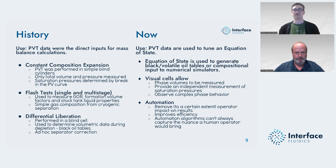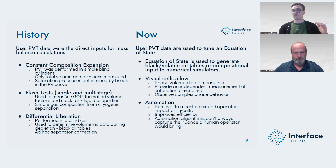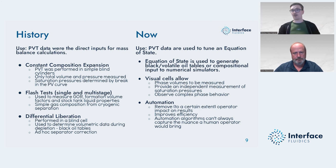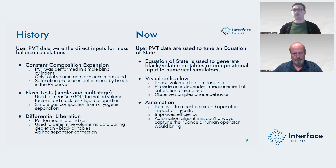Even in modern PVT reports, where we know the lab is using a windowed PVT cell, the lab report will typically not have the liquid relative volume reported — even though you know they can get that data. That's not because the lab is doing a bad job; that's on us to remember to ask for that specific measurement. The next time you order a CCE experiment, remember that most likely the lab will be using a windowed PVT cell. If you ask the lab for that liquid relative volume as well, they'll tack it on to the lab report. It's on us to ask for the things that we need.